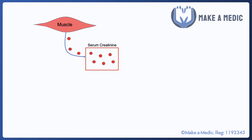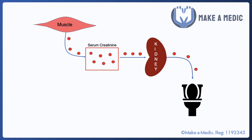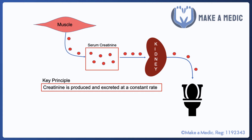Creatinine goes into the bloodstream, and from the bloodstream we can sample it and measure the serum creatinine concentration. From the bloodstream it goes to the kidneys and is excreted via the kidneys in your urine. An important property of creatinine is that it's freely filtered, which means that the concentration within the plasma is the same as the concentration within the filtrate of the kidneys.